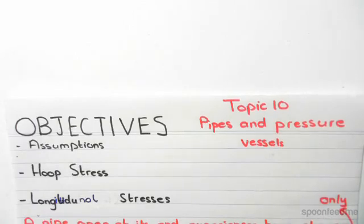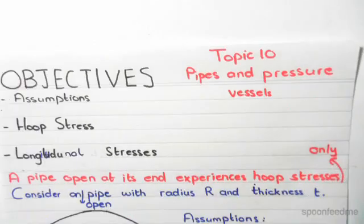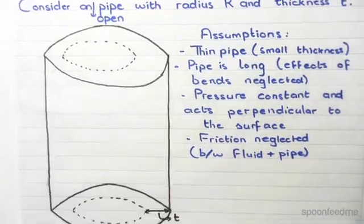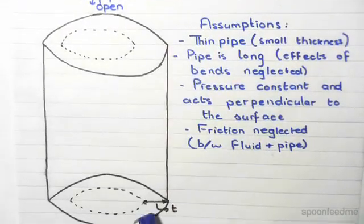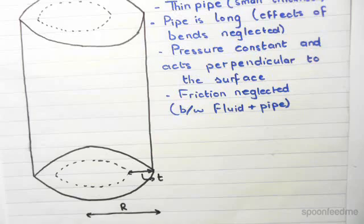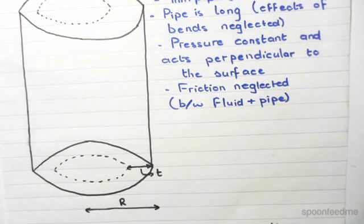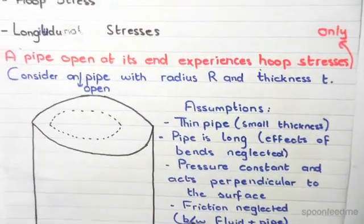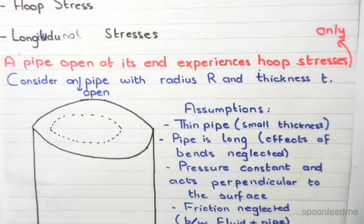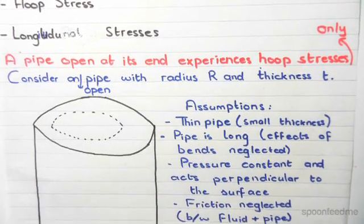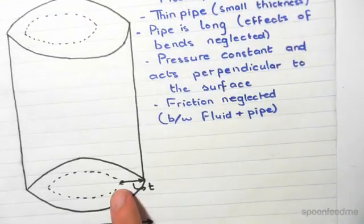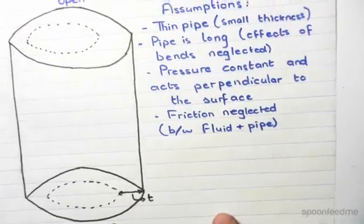Initially, we have this pipe here with thickness t and radius R. This is very exaggerated. A pipe open at its end experiences hoop stresses only. We should know that this section here and that section there are hollow, so the only thing it experiences are hoop stresses.